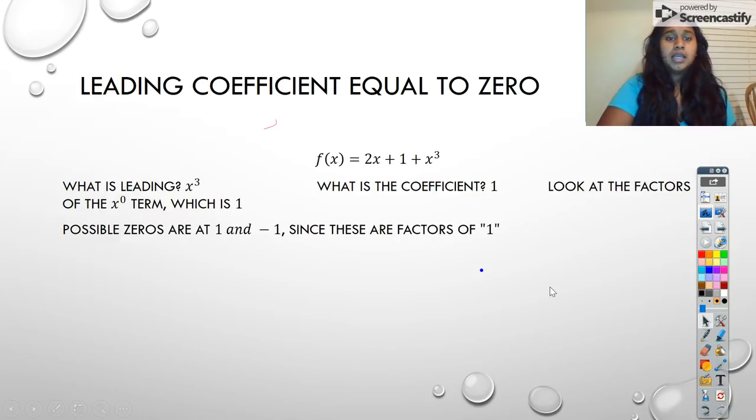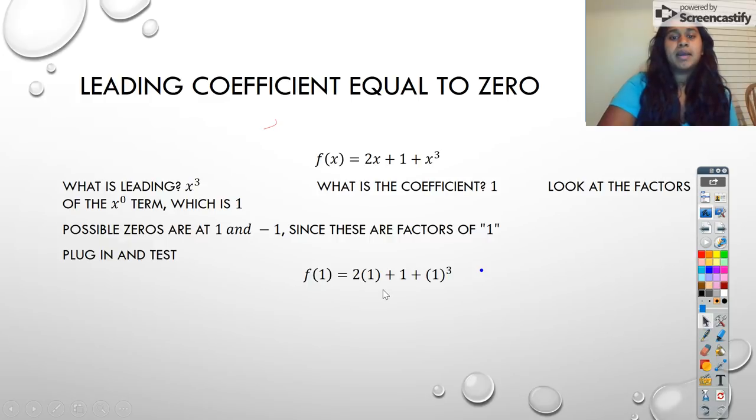What we're going to use is direct substitution. So I literally just plug in 1 and negative 1. So here's f(1), I plugged in my first factor, and I got 4. Well, that doesn't equal 0. So since that's not possible, that factor 1 can't be one of our true rational zeros.